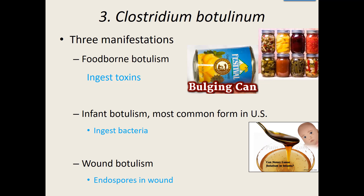Don't ever open and definitely don't eat any kind of bulging can — if it's bulging, something's growing in there. If you ingest this particular toxin, initial symptoms usually appear within a day or two: blurred vision, dilated pupils, constipation, and abdominal pain. If still left untreated, it can be deadly within a week of infection — depending on how much you ingested.